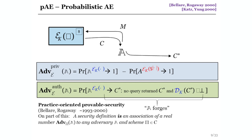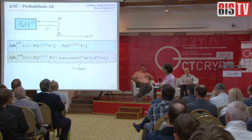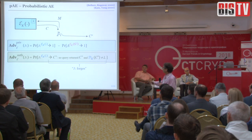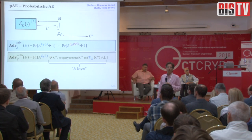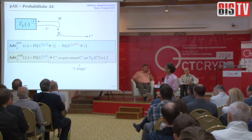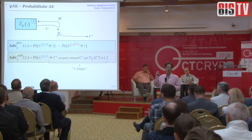In the practice-oriented provable security tradition, defining an advantage notion like this is taken as the definition of security — you're done at this point; you don't need to introduce asymptotics. This captures privacy. To capture authenticity, we give the adversary a different task: it has the real oracle and wants to output a ciphertext c* that decrypts to a string rather than the bottom symbol, yet was not returned by a previous query. Such an event is called a forgery. An authenticated encryption scheme is one for which both of these numbers are small for every reasonable adversary.